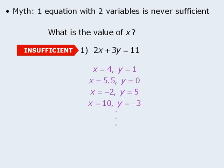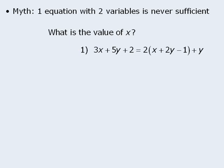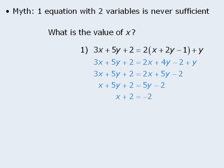Now these results are sometimes expanded into the myth that suggests that one equation with two variables never provides sufficient information. This is not the case. Take this example. Here we want to find the value of x, and statement 1 gives us one equation with two variables. Before we conclude that statement 1 is not sufficient, let's take a closer look at this equation. We can simplify it by expanding the right-hand side, then simplifying. From here we subtract 2x from both sides, then subtract 5y from both sides. Finally, when we subtract 2 from both sides, we can see that x equals negative 4, which means statement 1 is sufficient. Some equations may look like they have two variables, but one variable disappears upon closer inspection, so watch out for that.